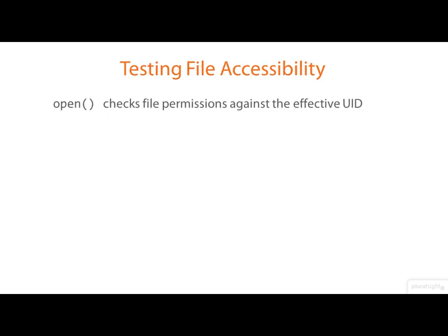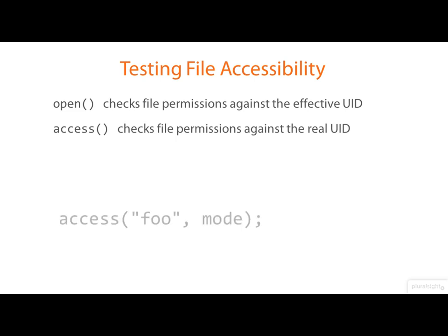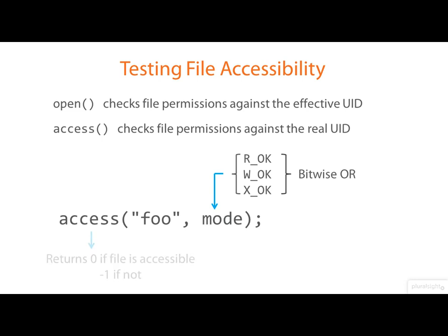When you try to open a file for reading or writing, the file permissions are checked against the effective user ID — that's the whole point of an effective user ID. But you can also ask the question: would the real user be able to access this file? That's done with the access() system call. The mode argument specifies what kind of access you're looking for — reading, writing, executing, and so on — and you get back zero if the file is accessible and minus one if not.